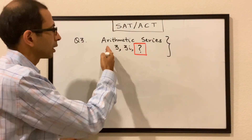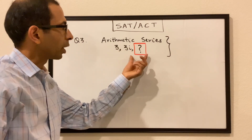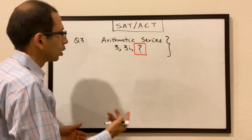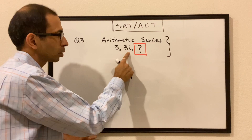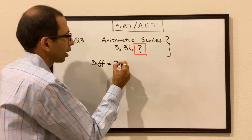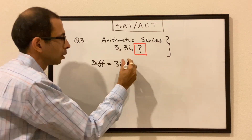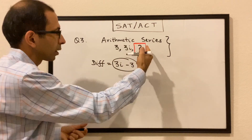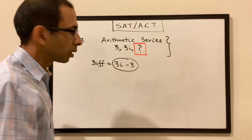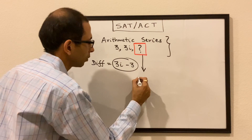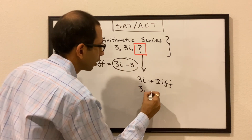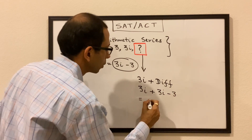Question 3: we have an arithmetic series 3, 3i and we have to find the next term. In an arithmetic series, the difference between consecutive terms is constant. The difference here is 3i - 3. To find the third term, we add this difference to the second term: 3i + (3i - 3).